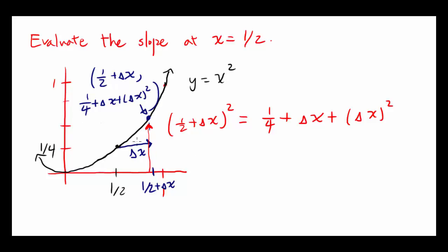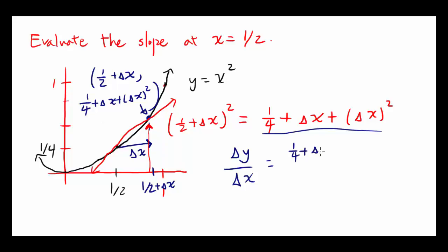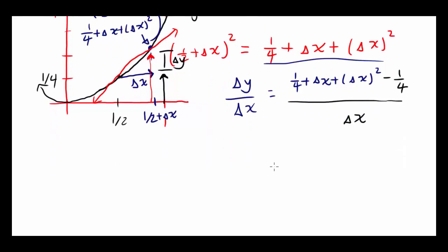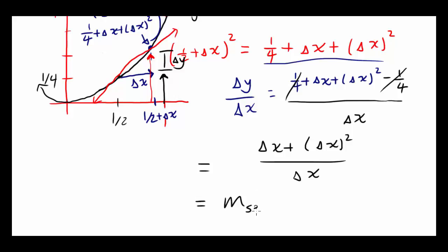Now what's the slope of the second line going through these two points? The slope is change in y over change in x. Change in y is this value minus 1 fourth: so 1 fourth plus delta x plus delta x squared minus 1 fourth. The 1 fourths cancel, giving us delta x plus delta x squared over delta x — that's the slope of our second line.